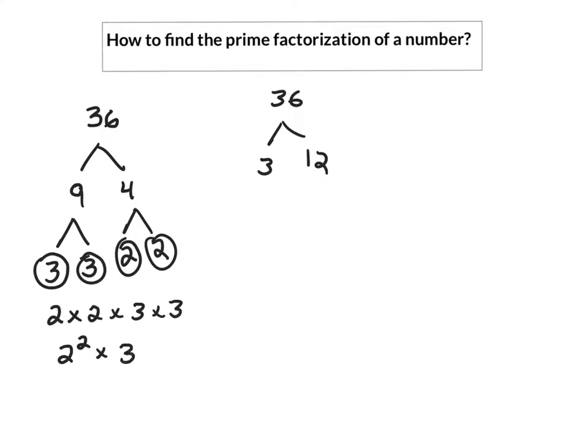What if someone in class said, 'I did 3 and 12'? If they did 3 and 12, the first thing they would do is say, 'Oh, 3 is prime. I'm going to circle it. Let's break down the 12.'